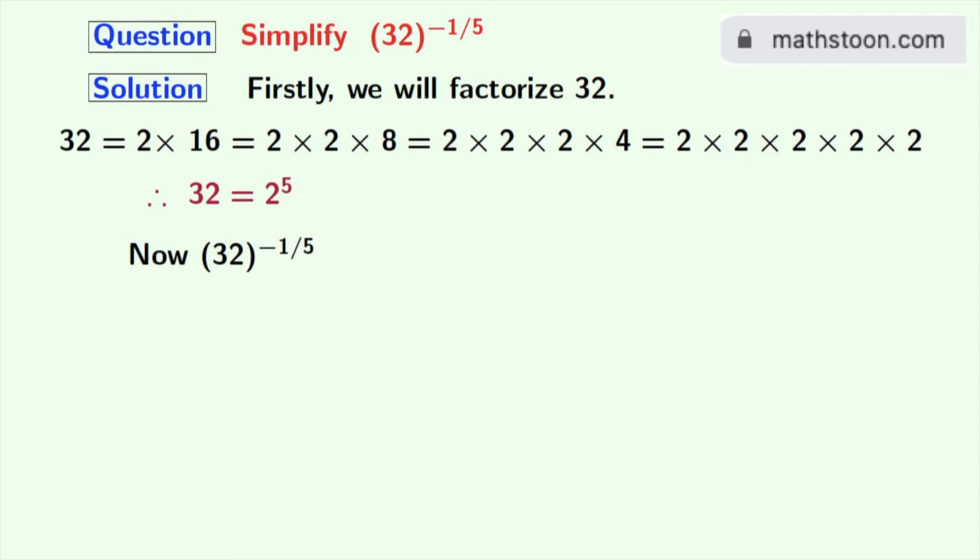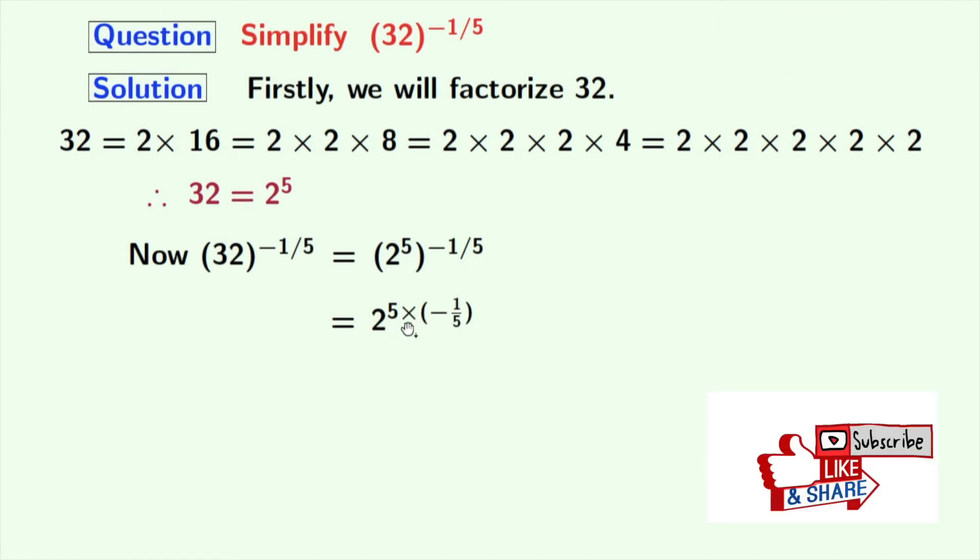Now our given quantity is 32 whole power minus 1 by 5. Using this fact, we can rewrite this as 2 power 5 whole power minus 1 by 5. Rearranging this we get 2 power 5 times minus 1 by 5.